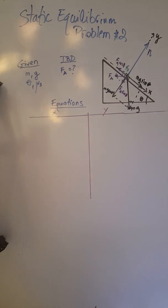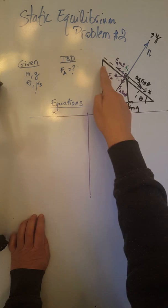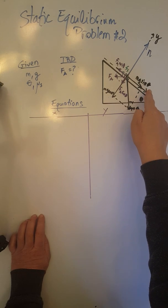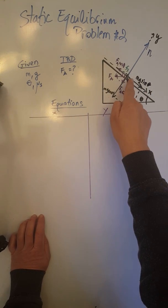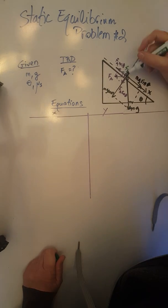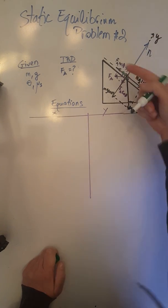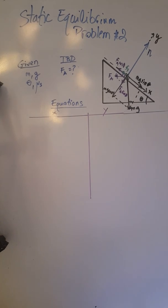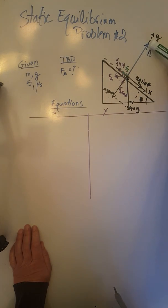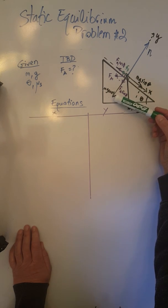So now all forces act in only two directions. Along the x-axis: mg sine theta acts down the ramp, while the static friction F_s and F_a cosine theta act up the ramp. Along the y-axis: the normal force acts outward, while F_a sine theta and mg cosine theta act in the opposite direction.